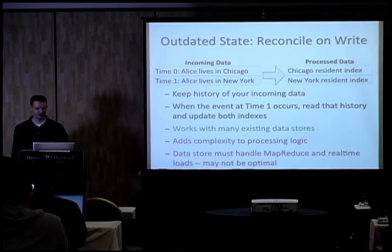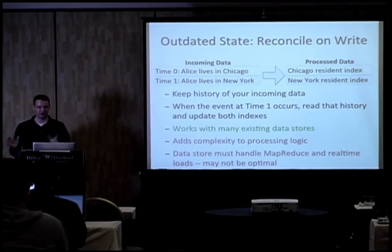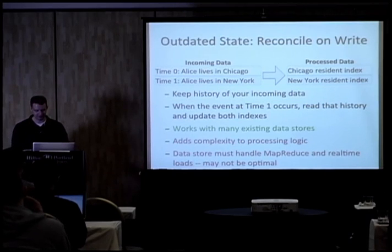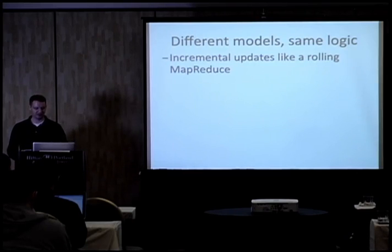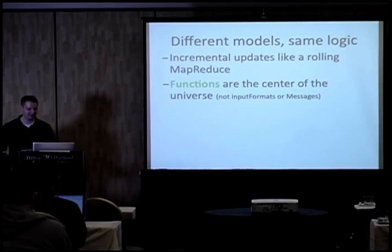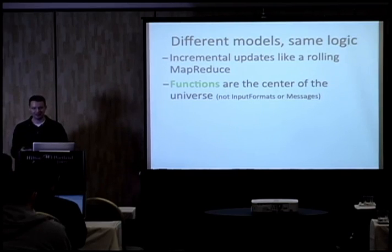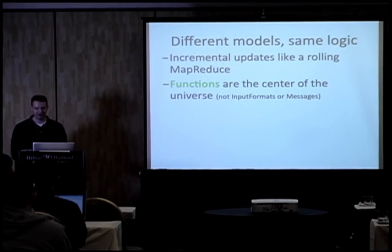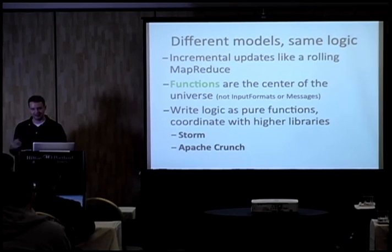The data store you're writing to must handle both MapReduce and real-time processing. Through all of this, MapReduce and real-time processing really have the same logic. The implication is that if you want to share logic between MapReduce and real-time processing, the functions have to be the center of your universe. In MapReduce we often think in terms of input and output formats; in stream-based processing we think of messages. Those don't intersect between the two processing models. The key is that we need to write logic as pure functions as much as possible — given a defined input, we always produce the same output — then coordinate those functions with higher-level libraries that can be deployed in either processing model.